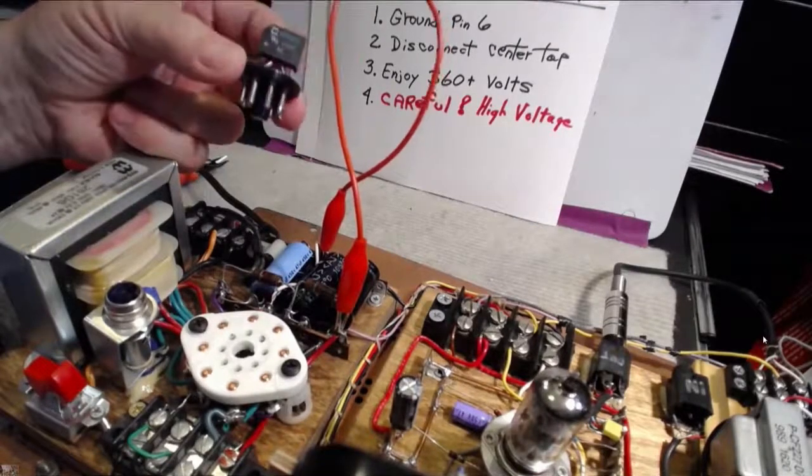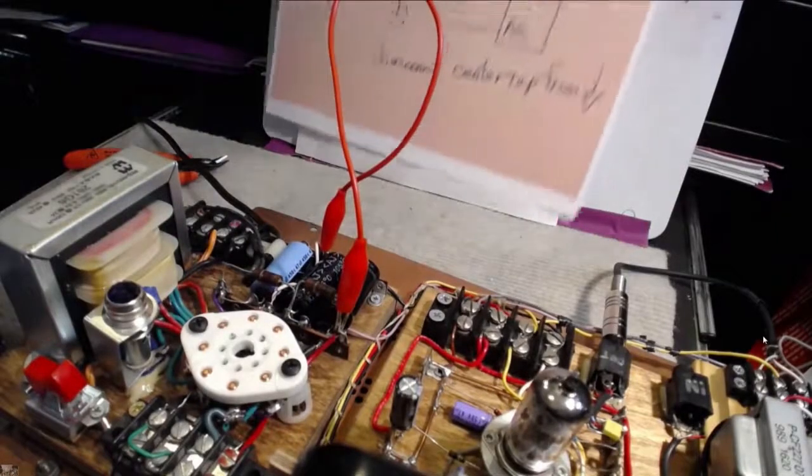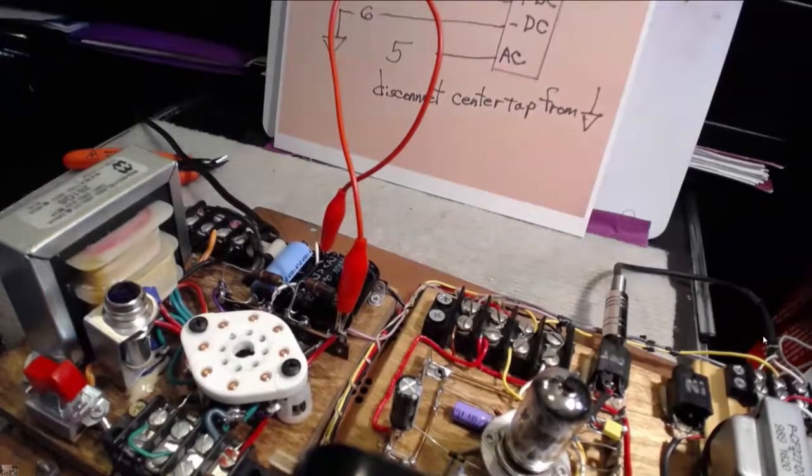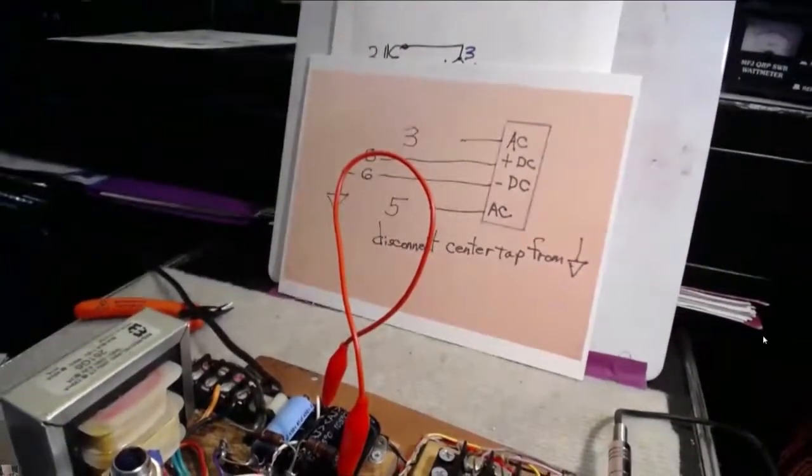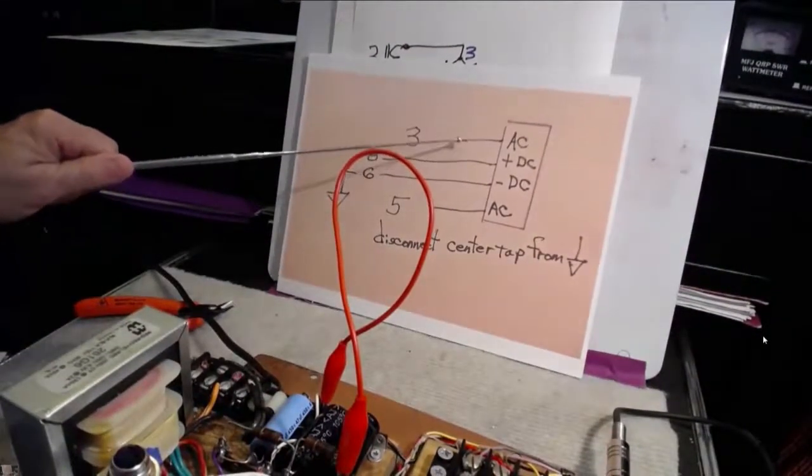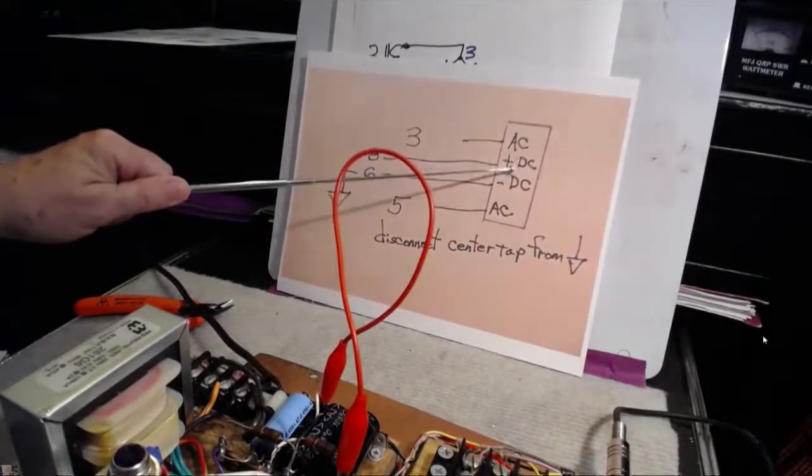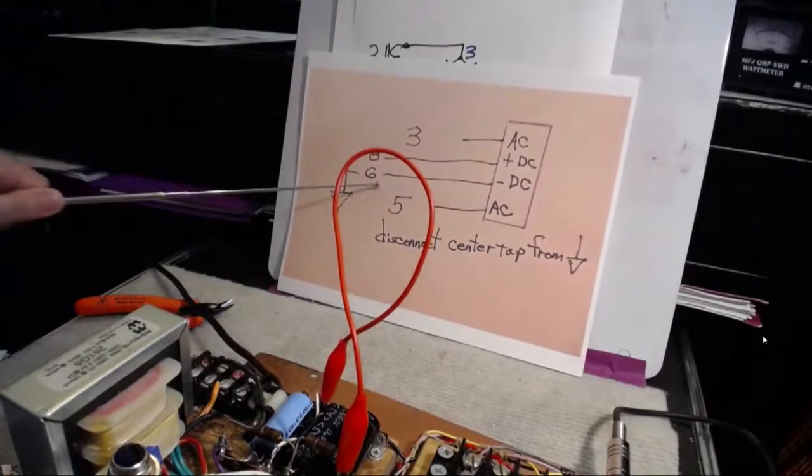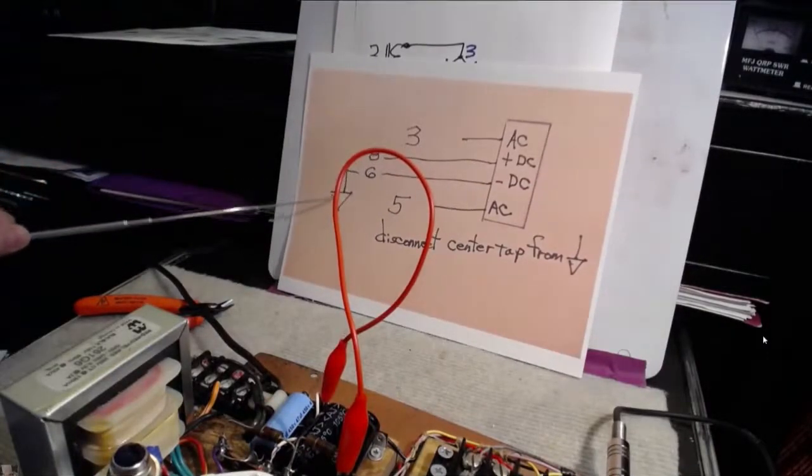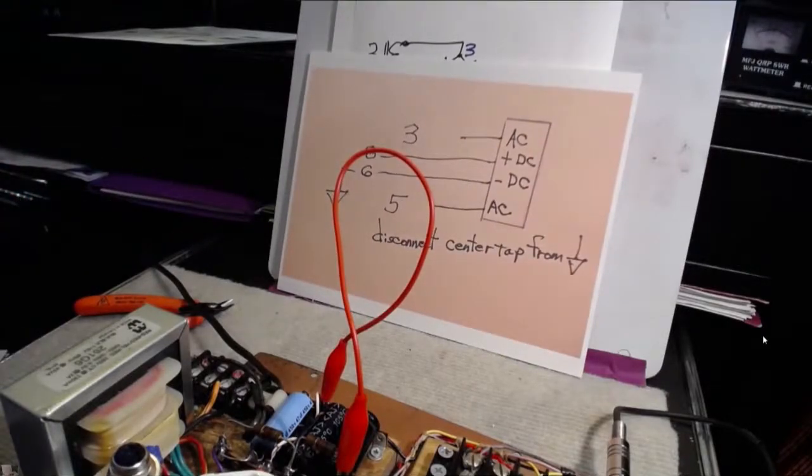It's very simple to do. You have four leads, and those leads are here on this little drawing. We have the AC going to 3 and 5. The plus DC out is going to pin 8. And then this is going to go to pin 6, which we had to ground. That does not affect it if you use the tube, because it's not used.